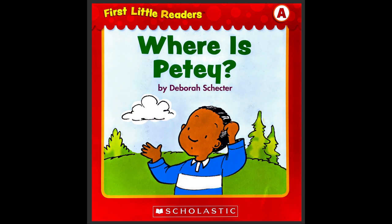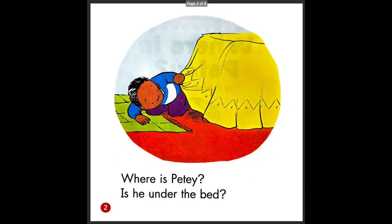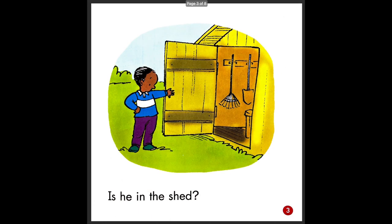Okay, are you ready to read? Follow along with your finger. Here we go: Where is PT? Is he under the bed? So the boy is looking under the bed. And what color is his bed blanket? It's yellow, right?